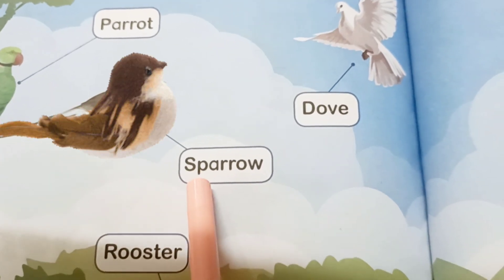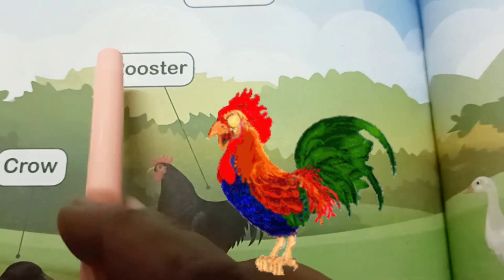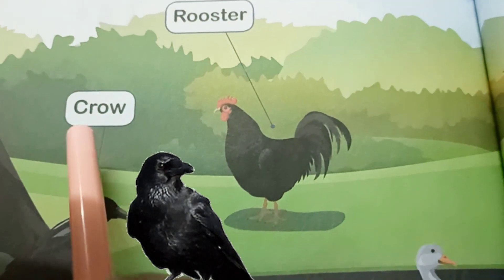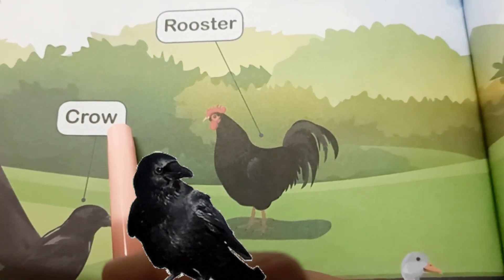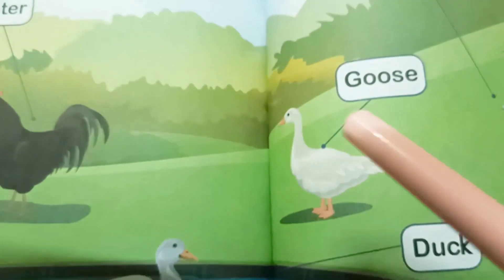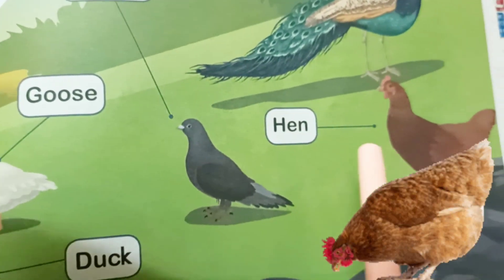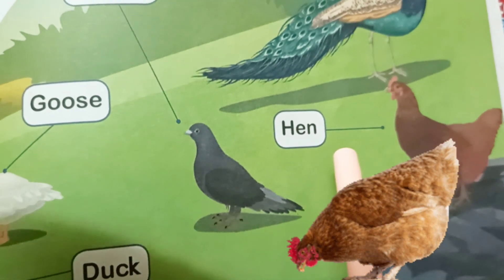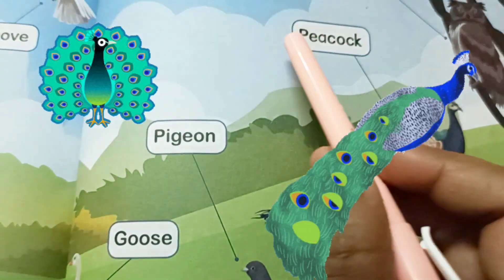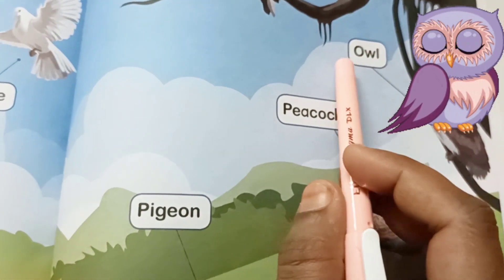Sparrow — S-P-A-R-R-O-W — Sparrow. Rooster — R-O-O-S-T-E-R — Rooster. Crow — C-R-O-W — Crow. Duck — D-U-C-K — Duck. Goose — G-O-O-S-E — Goose. Hen — H-E-N — Hen. Pigeon — P-I-G-E-O-N — Pigeon. Peacock — P-E-A-C-O-C-K — Peacock. Owl — O-W-L.